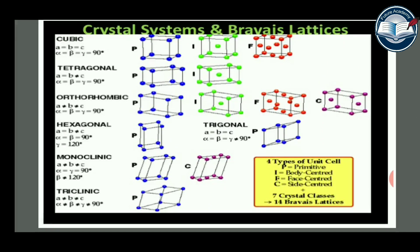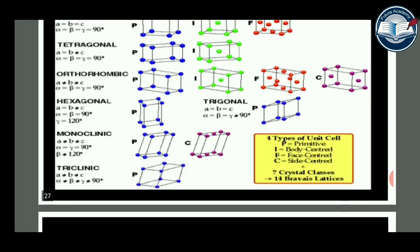Crystal systems and Bravais lattices: the four types of unit cells are primitive, body-centered, face-centered, and side-centered. Combined with the seven crystal classes, this gives 14 types of Bravais lattices in total.